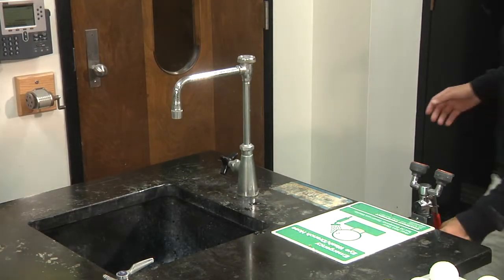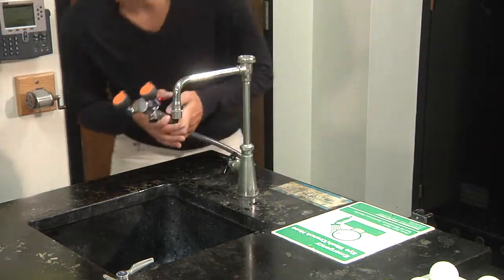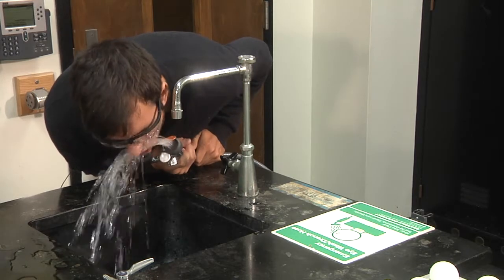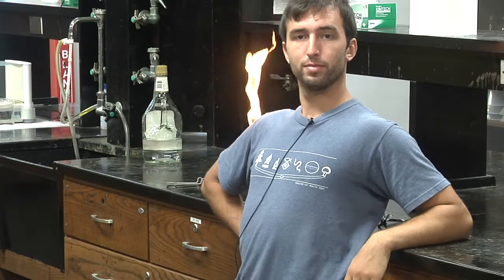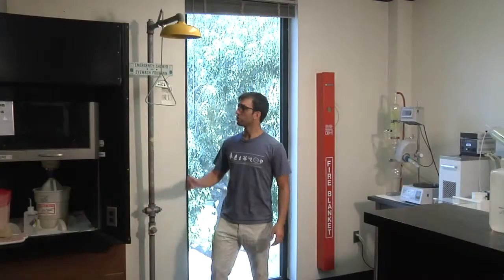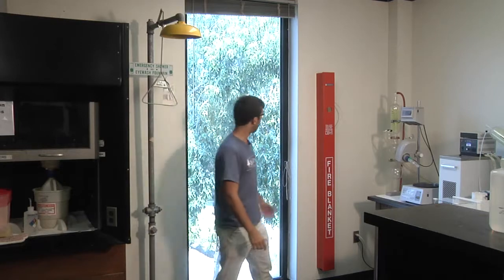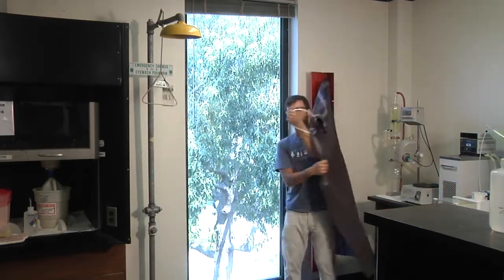The eyewash station is located at the front of the lab. To operate, just pull out, point at your eyes, and squeeze. Don't forget to remove your safety glasses. If you happen to be on fire, you can use the safety shower by standing under it and pulling this handle, or the fire blanket by merely pulling this and wrapping it around your body.